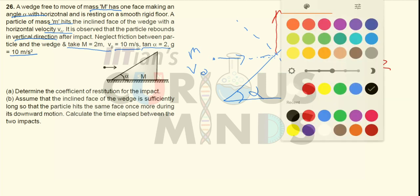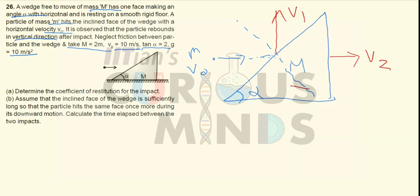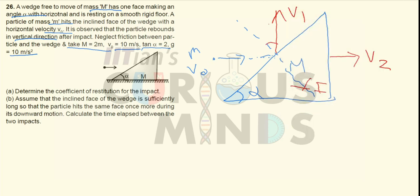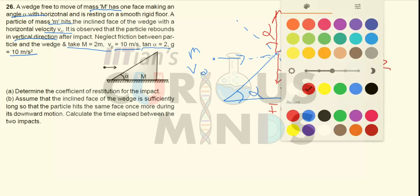If the particle moves in the vertical direction, there has to be an impulse perpendicular to the face of the wedge. This angle with the impulse is alpha, so the impulse component in the horizontal direction will be I·sin(α) and in the downward direction it will be I·cos(α). This will be the impulse on the wedge.